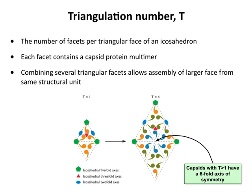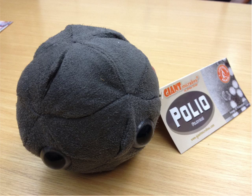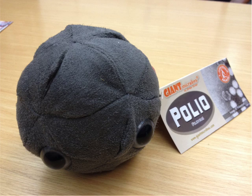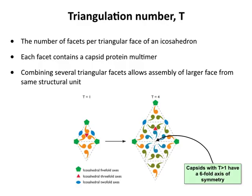I have a plushy poliovirus here — these are giant microbes — and you can see there's a five-fold axis of symmetry with five triangles around it, and you can also find three- and two-fold axes. Here is a nice contrast: a rod-shaped virus made up of capsid proteins compared to an icosahedral particle — also made of capsid proteins — that makes a sphere. An important concept here is the T number, or triangulation number: the number of facets per triangular face of an icosahedron. If there's one facet, T equals one; if there are three, T equals three.